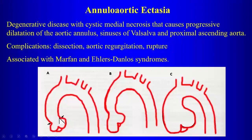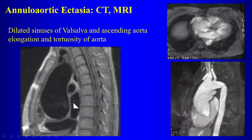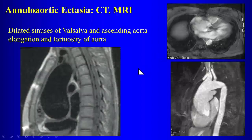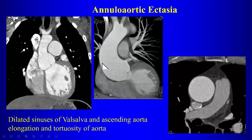Another complication is aortic regurgitation: whenever the ascending aorta dilates and involves the aortic annulus, the aortic valve cannot completely close, resulting in aortic valvular regurgitation. On imaging, the dilatation extends from the ascending aorta down to the sinuses of Valsalva, producing the classic tulip bulb sign. These are examples of annuloaortic ectasia — here there is also dilatation of the ascending aorta above the sinuses of Valsalva.